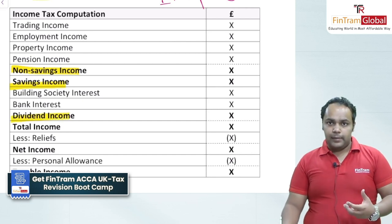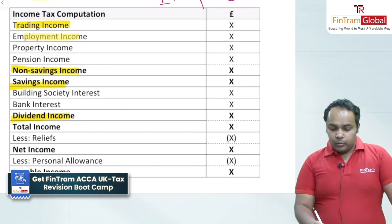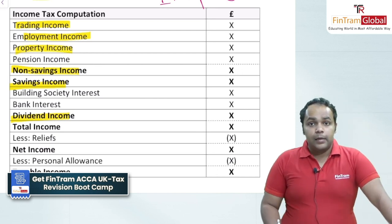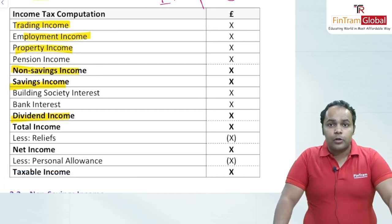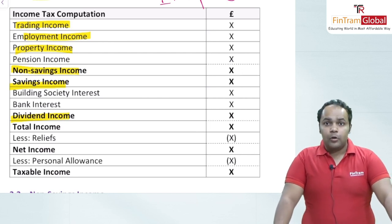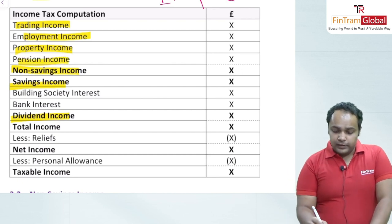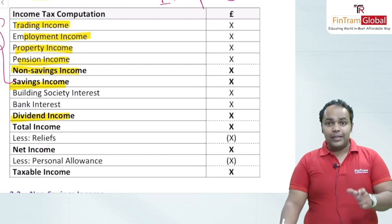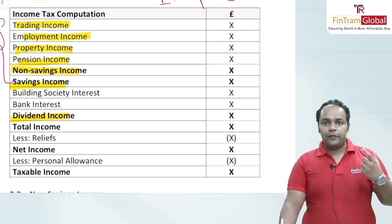Non-savings income can be of various types. Trading income is earned from a self-employed business or profession. Employment income includes salary, wages and bonuses from an employer. Property income covers rental or lease income from a property. Pension income is what an individual after retirement can earn through a government, company or any other scheme. So there are four kinds of non-savings income: trading, employment, pension and property.